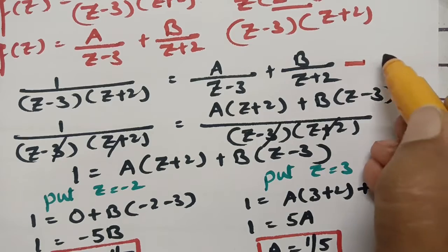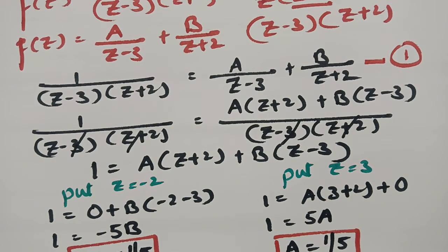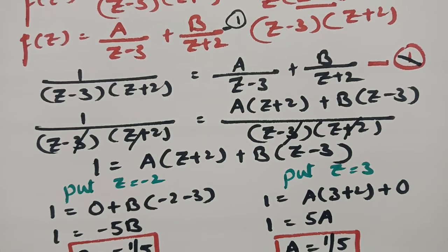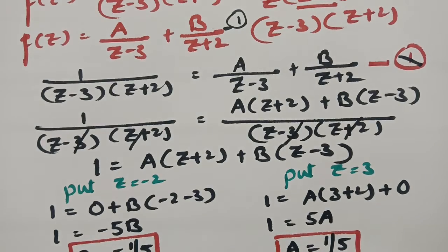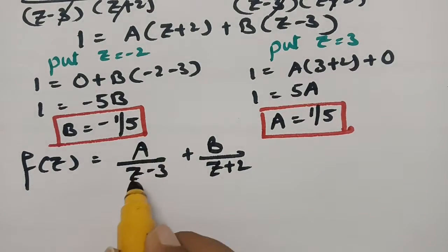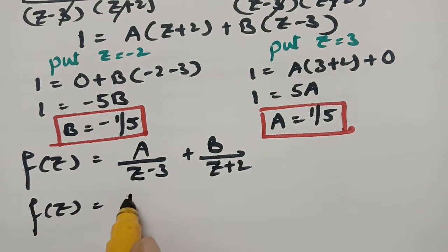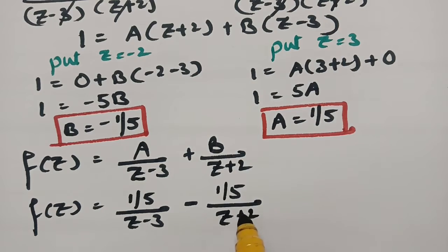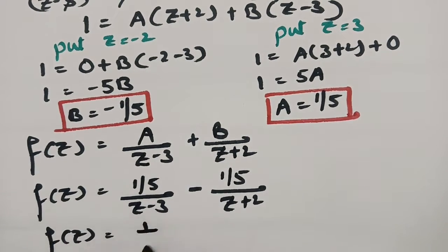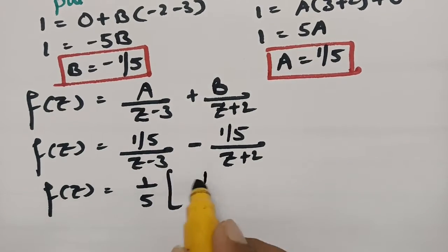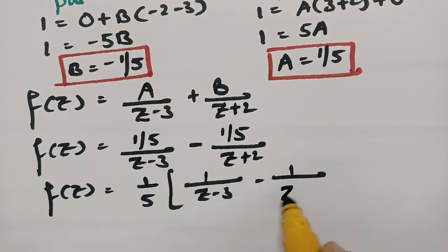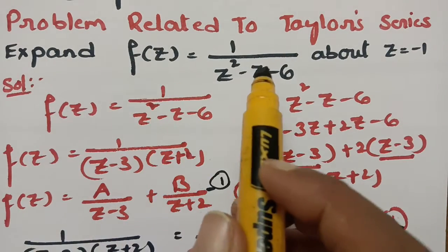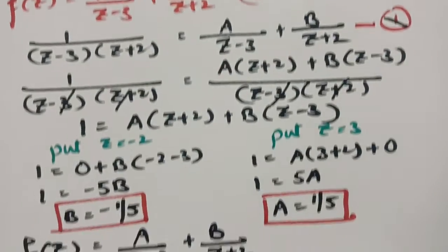After getting A and B, I substitute back into the partial fraction equation. So f(z) = (1/5)/(z - 3) + (-1/5)/(z + 2). Taking 1/5 common: f(z) = (1/5)[1/(z - 3) - 1/(z + 2)]. The question asks us to expand f(z) about z = -1.